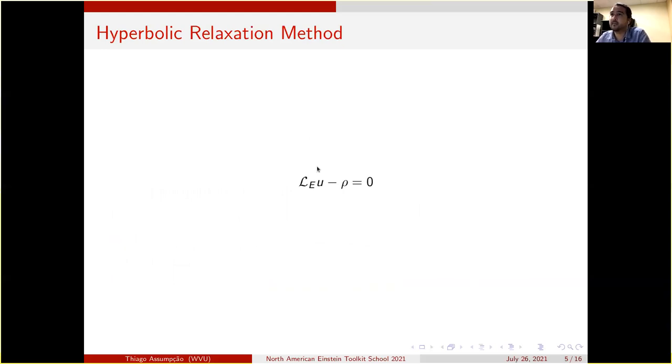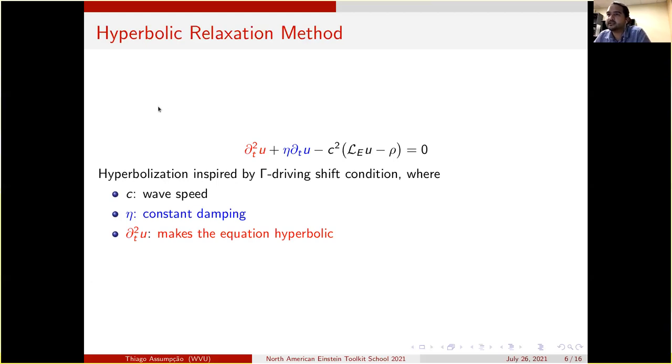So how does the hyperbolic relaxation method work? You start with the elliptic equation and you include a couple of things. This hyperbolization is inspired by the gamma driving shift condition. We have a wave speed, and this is going to be very important as we will see shortly. We have some damping—eta is a constant damping term. And we also have the second derivative of our scalar function, which makes the equation hyperbolic.